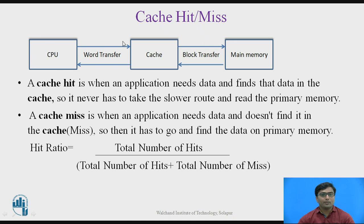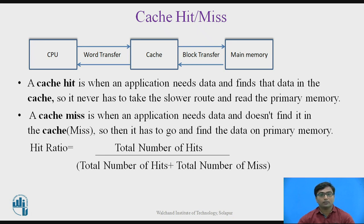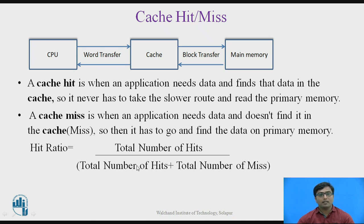Cache is located between the Main Memory and CPU. If a word is found in Cache, that word is transferred between the CPU and Cache. If the CPU is accessing the Main Memory in case of a Cache Miss, it accesses that block from the Main Memory at a time. In the next slide, we will see what is a block and what is a word transfer. To calculate the Hit Ratio, the formula is: Hit Ratio = total number of hits divided by total number of hits plus total number of misses, which is the total number of accesses.